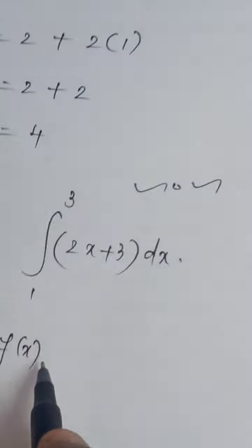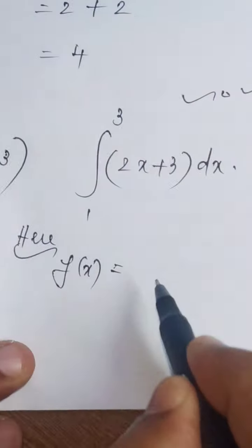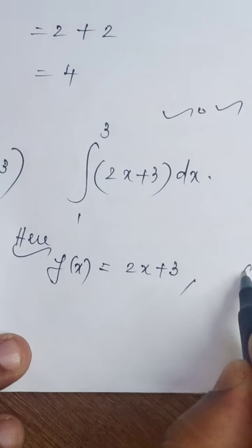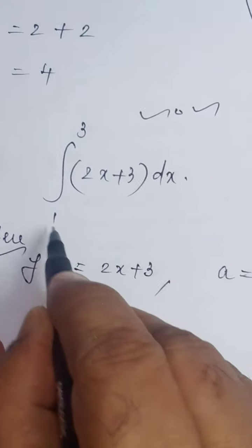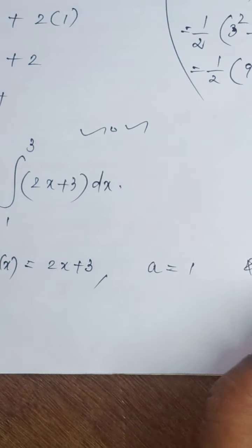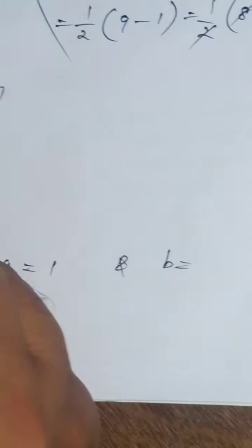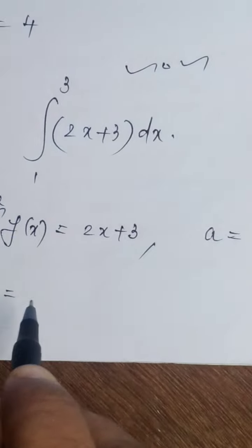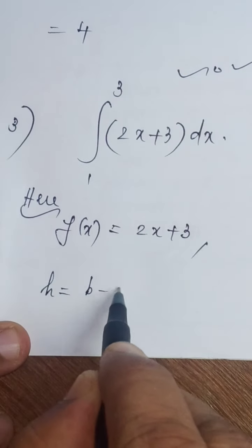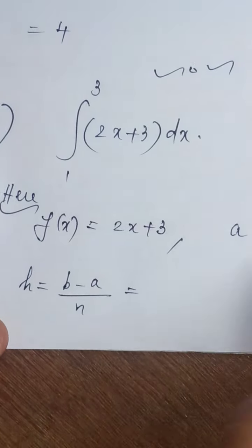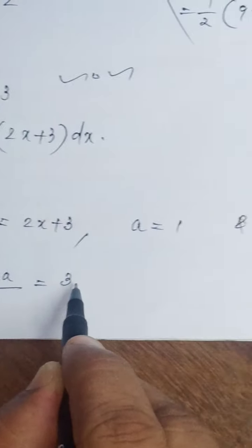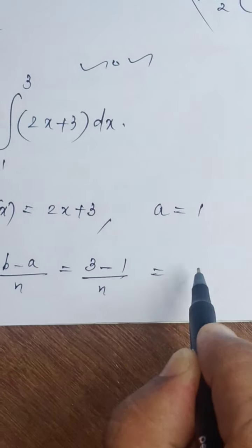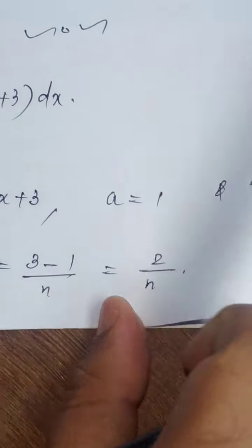Here, f(x) equals 2x + 3. A is the lower limit, 1, and B is the upper limit, 3. Then, you have to find h. h equals b minus a by n, that is 3 minus 1 divided by n, equals 2 by n.